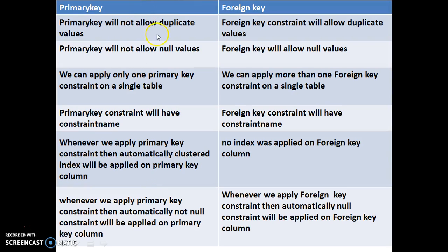Primary key will not allow duplicate values, whereas foreign key constraint will allow duplicate values. Primary key will not allow null values, whereas foreign key will allow null values. We can apply only one primary key constraint on a single table, whereas we can apply more than one foreign key constraint on a single table. Both primary key and foreign key constraints will have a constraint name. Whenever we apply primary key constraint, automatically a clustered index will be applied on the primary key column. No indexes will be applied on the foreign key column.